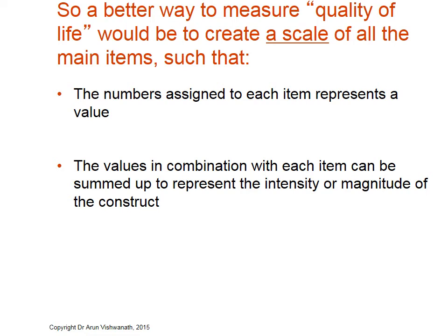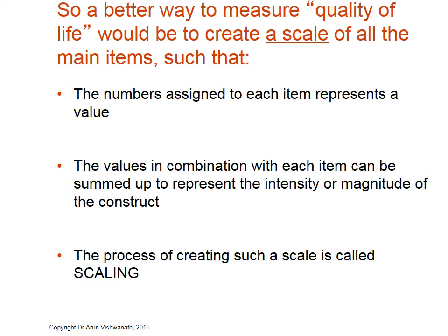For quality of life, there may be different facets, and each facet may have different weights. For some people, schooling might be more important; for some, sanitation might be more important; and safety might be universally important. Each of these items needs to have either a value we assign or a value the individual gives based on his or her preference.